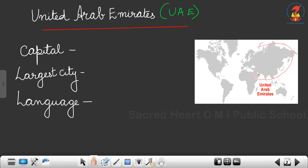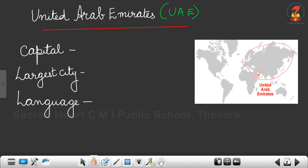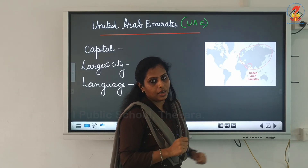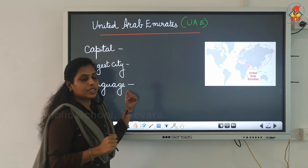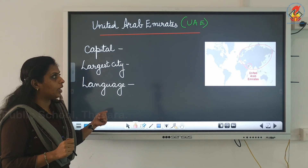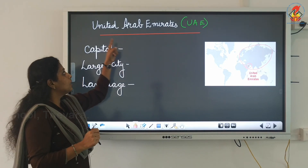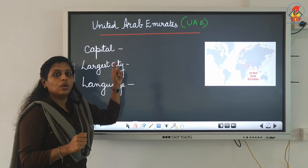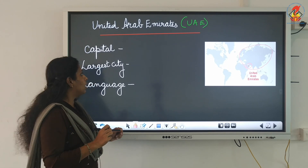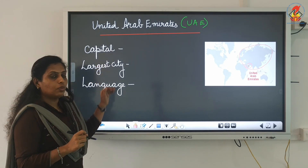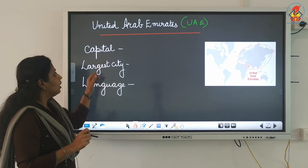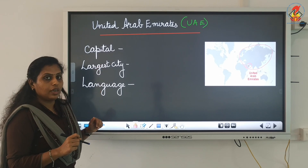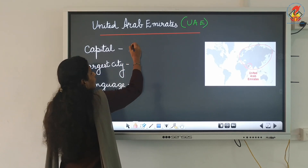You can see Asia here. In the Asian continent, towards the western side of Asia, is the UAE. Now let us collect some information about UAE. UAE stands for United Arab Emirates. It is located in western Asia. The capital of UAE is Abu Dhabi.